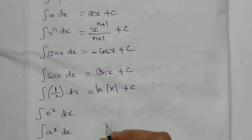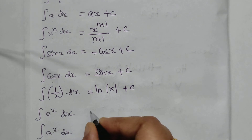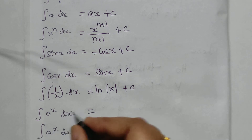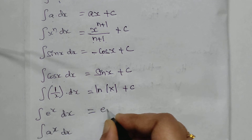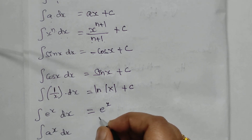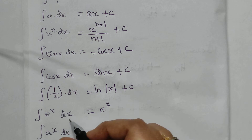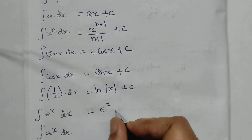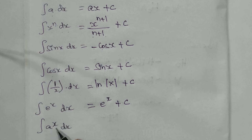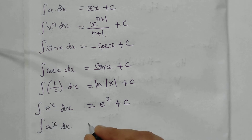Next, the integral of e power x dx — the exponential integral of e power x gives the same value as the output. So the integral of e power x is equal to e power x plus a constant C.